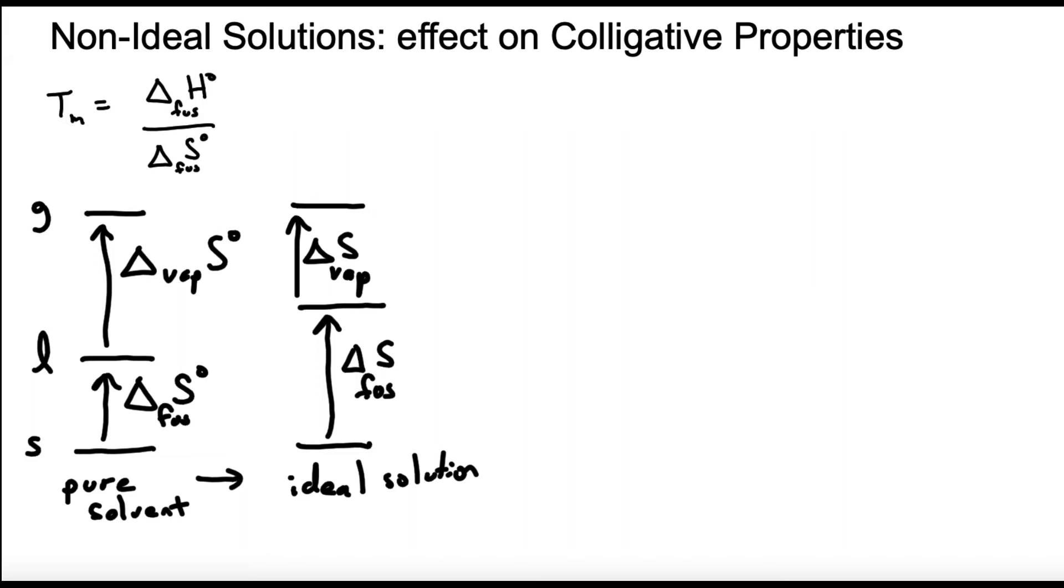And you can see how that's going to affect the melting temperature. We've made our entropy of fusion bigger so we plug that bigger number in here and it's going to make our melting point go down. It's going to be a smaller number in kelvins. Okay that's great. Now that's something you already know.